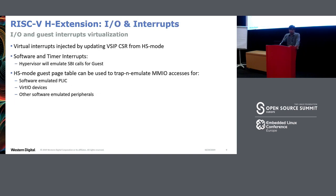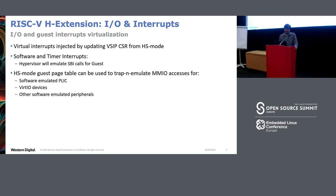Injecting virtual interrupts to guest vCPUs is very straightforward — we directly update the VSIP CSR from HS mode to inject per-CPU virtual interrupts. For software and timer interrupts — IPIs within the guest and timer interrupts for the guest — we have SBI calls, which will be explained later. The most critical IP being emulated in software is PLIC, the interrupt controller for the VM. We also have an emulated UART for the guest.